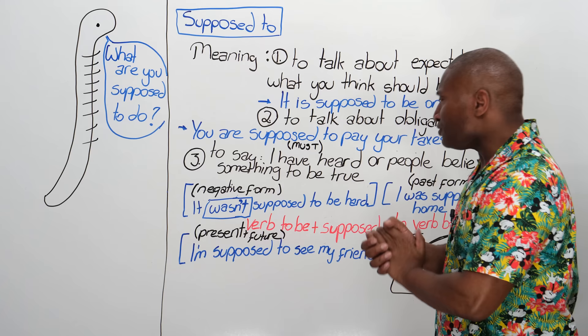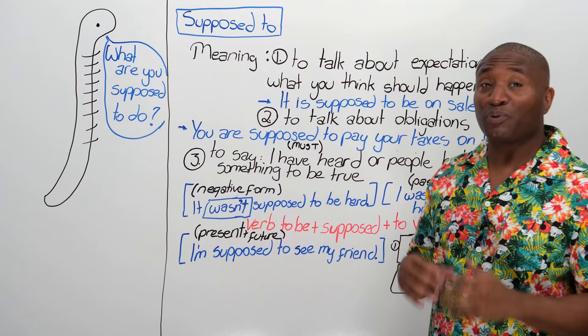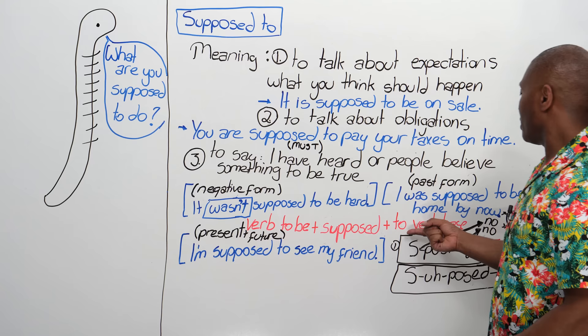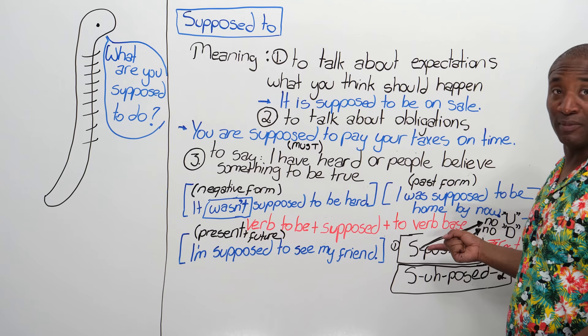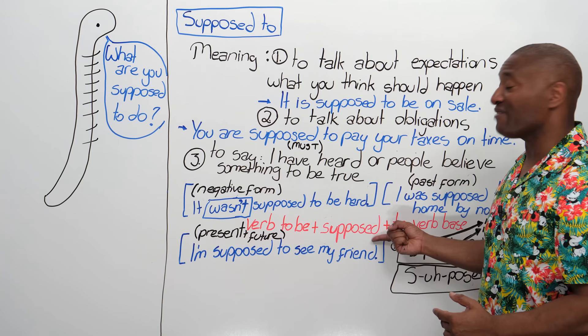So, what is supposed to and how do we write it? Let's discuss the form and the pronunciation. In red I have: verb to be, supposed, and then the verb base — the infinitive form. When you have the preposition to before a verb in the base, especially with a modal verb in front of it, it is the infinitive form. We have the verb to be, supposed — and it has to have a D, which I'll explain in a moment — and then the infinitive form of the next verb.